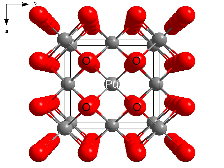Plutonium oxide is the chemical compound with the formula PuO2. This high melting point solid is a principal compound of plutonium. It can vary in color from yellow to olive green, depending on the particle size, temperature, and method of production.